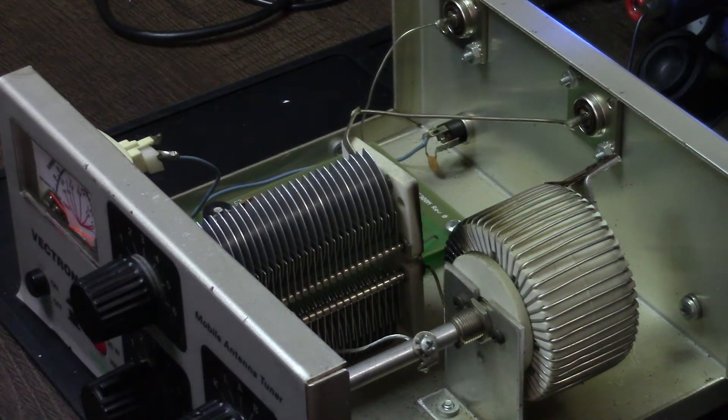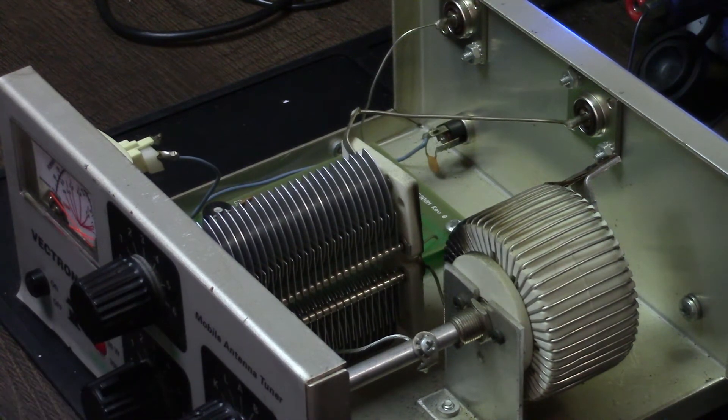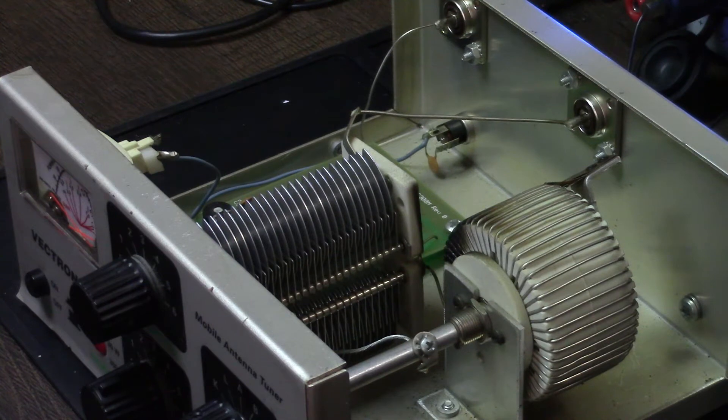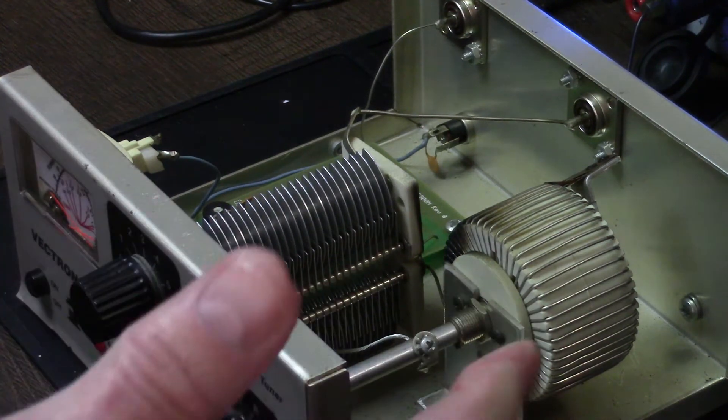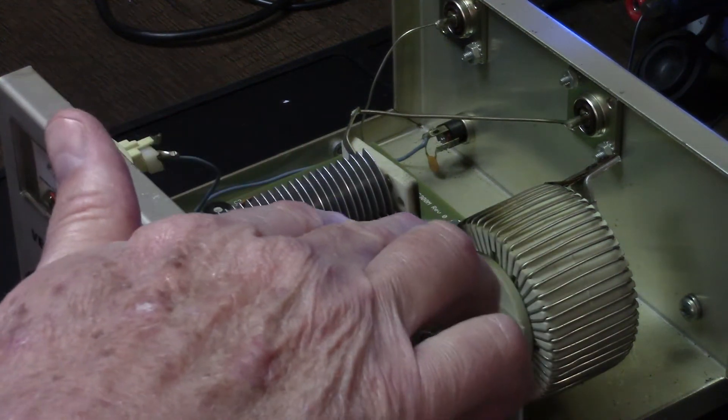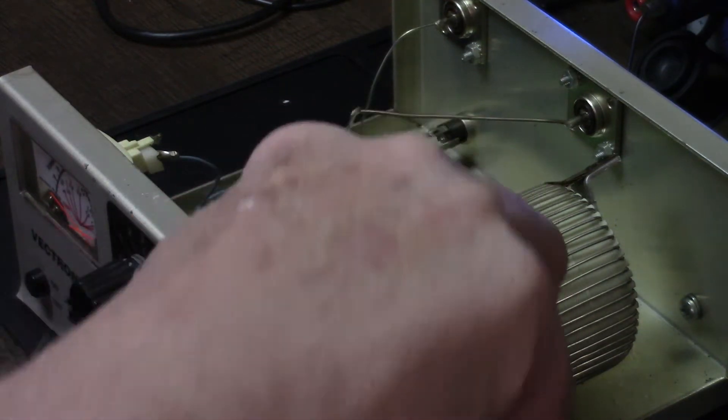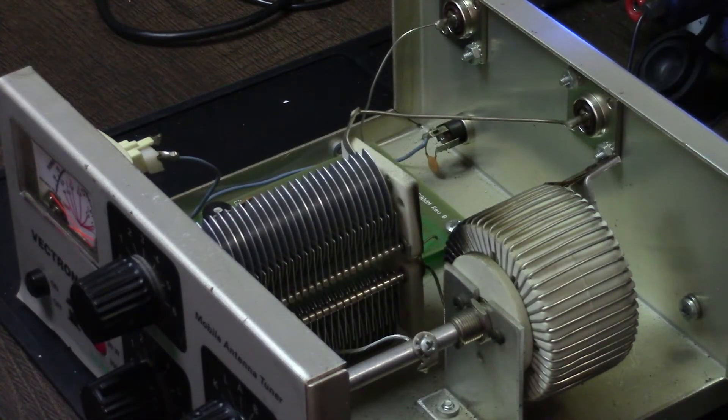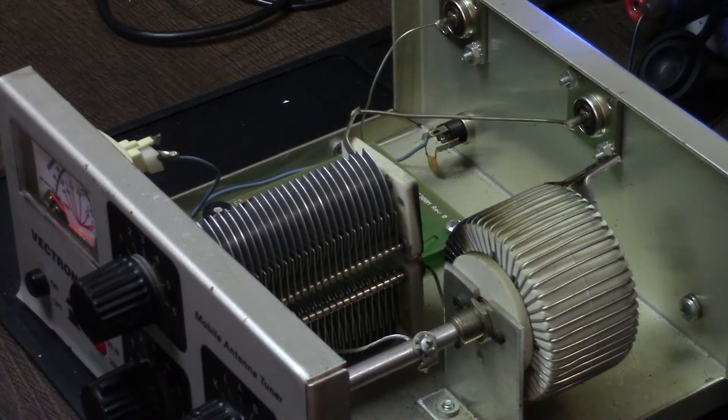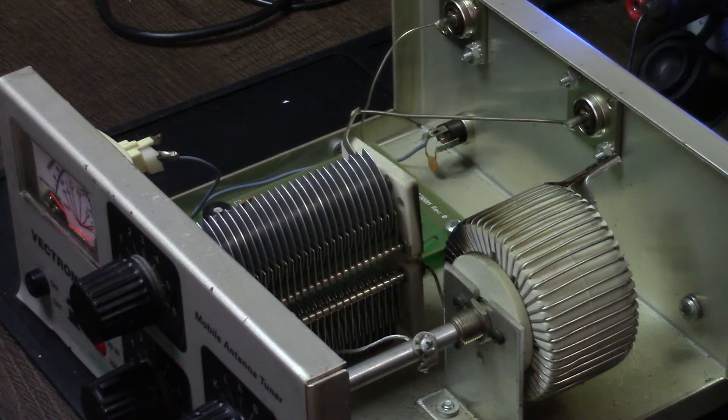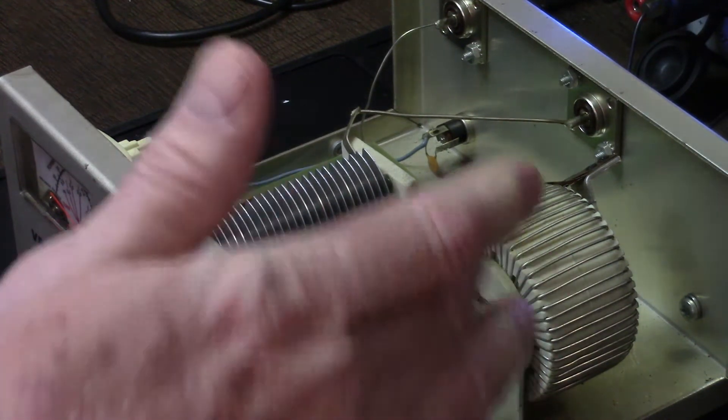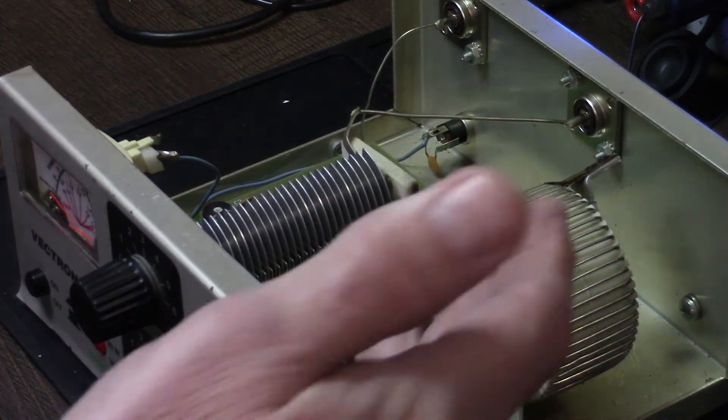That's another thing you want to make sure of - anytime you're tuning up an antenna using an antenna tuner, you want to make sure your radio is on low power. But even at ten watts, apparently because of the dust buildup on here, I got some arcing from the RF and I smelled something. It smelled really bad. I never really saw any smoke come out but the smell was obvious, so I shut it down, opened it up, and saw this.